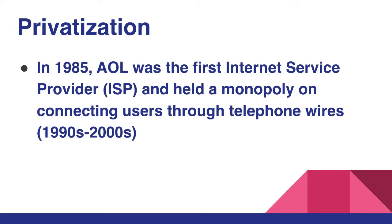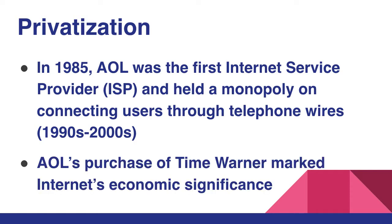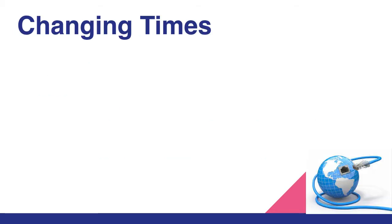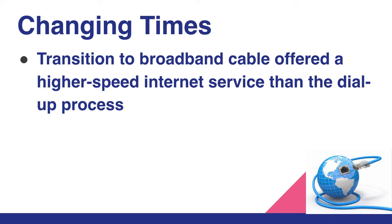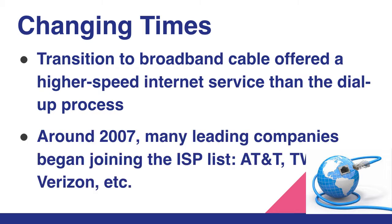In 1985, AOL was the first Internet Service Provider (ISP) and held a monopoly on connecting users through telephone wires from the 1990s to the 2000s. AOL's purchase of Time Warner marked the Internet's economic significance. The transition to broadband cable offered a higher-speed service than the dial-up process. After broadband, around 2007, many leading companies joined the ISP list, like AT&T, Time Warner Cable, Cox, and Verizon.